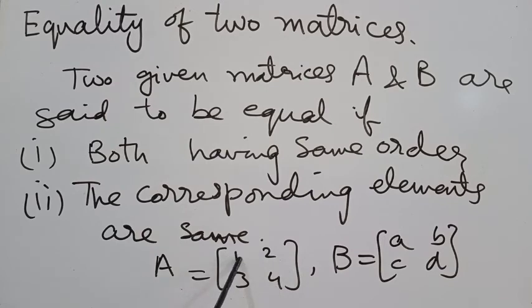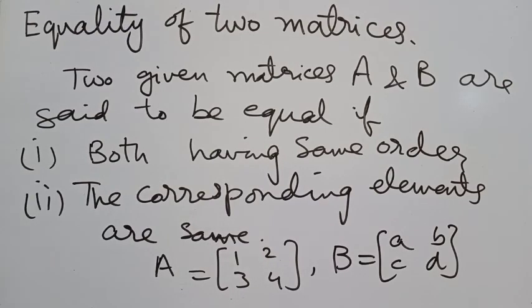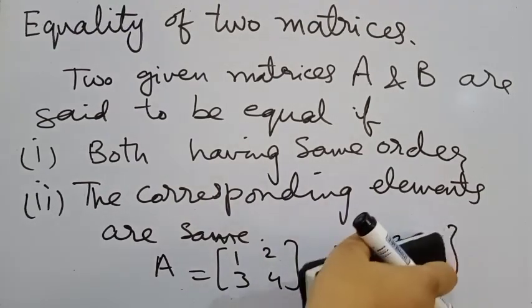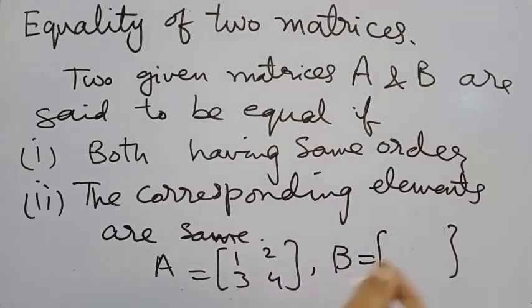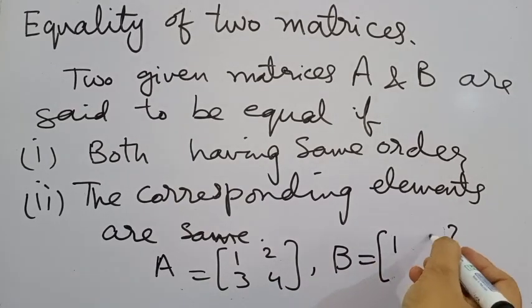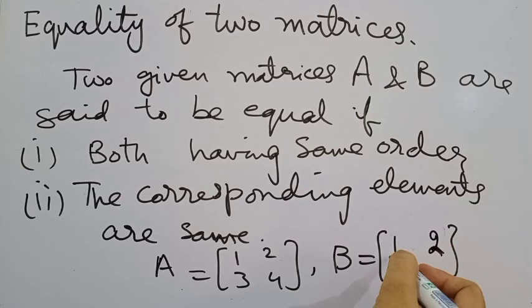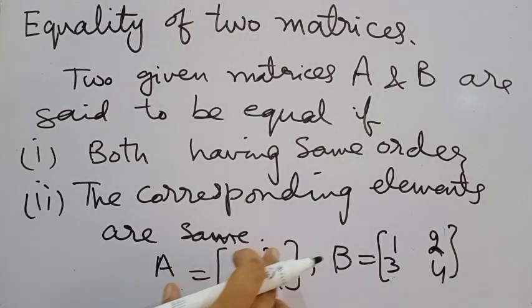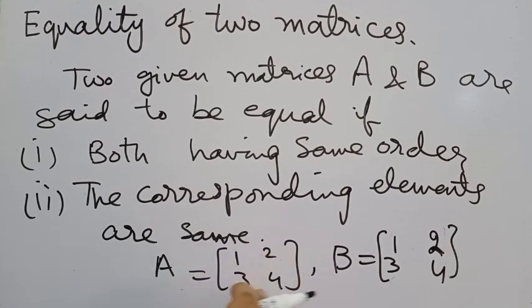Corresponding means A11 and A11 must have same elements. In this way, we can say that A and B are equal if B has same elements on the same position - first, second, third, fourth position having same elements. This is the equality of two matrices.